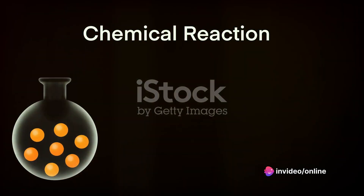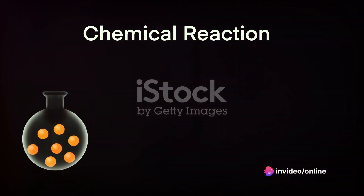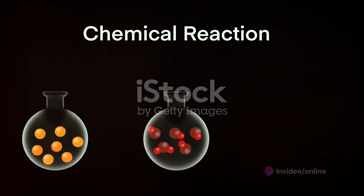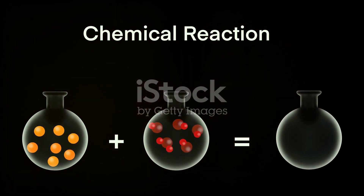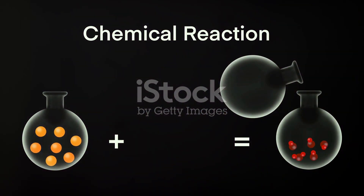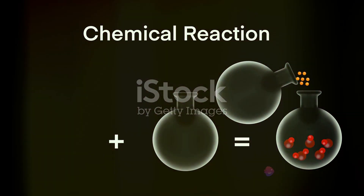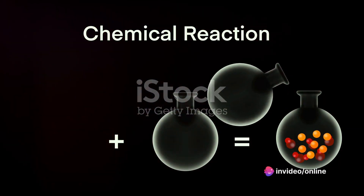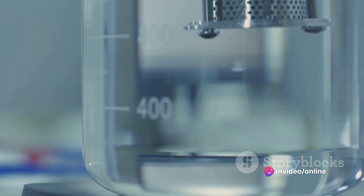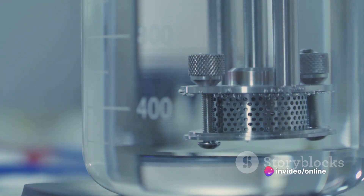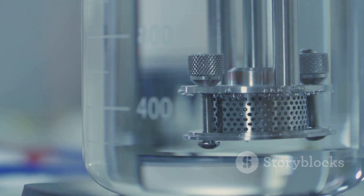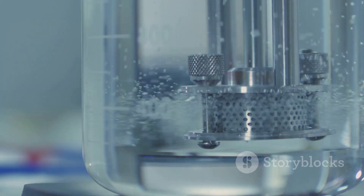Moving on to Question 2: Which process creates energy in organisms? Is it A. Growth, B. Nutrition, C. Reproduction, or D. Respiration? The correct answer is D. Respiration. Our bodies break down food into smaller molecules through digestion. During respiration, these molecules combine with oxygen to release the energy our bodies use for various activities.